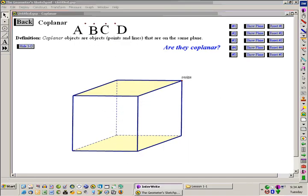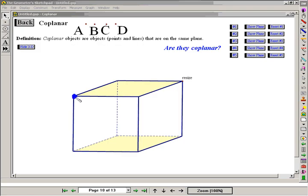And to have points that are not on the same plane, that would be non-coplanar. For example, this point right here would not be coplanar with the other three. So those four points as a group would be non-coplanar.